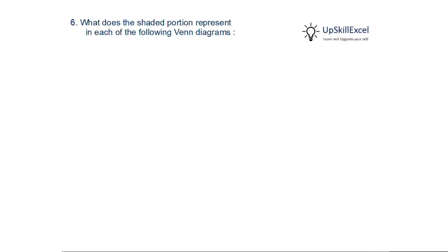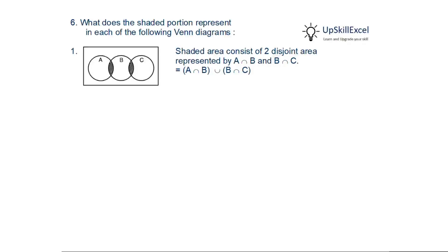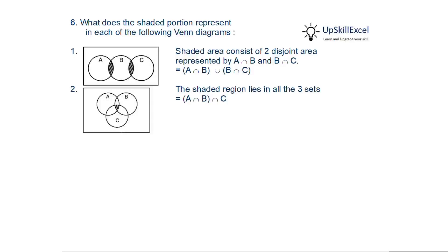What does the shaded portion represent in each Venn diagram? In the first diagram, the shaded area is divided into two parts: the left side is the intersection of A and B, and the right side is the intersection of B and C. So the shaded area is (A intersection B) union (B intersection C). In the second diagram, the shaded portion is common to A, B, and C, so it is A intersection B intersection C.